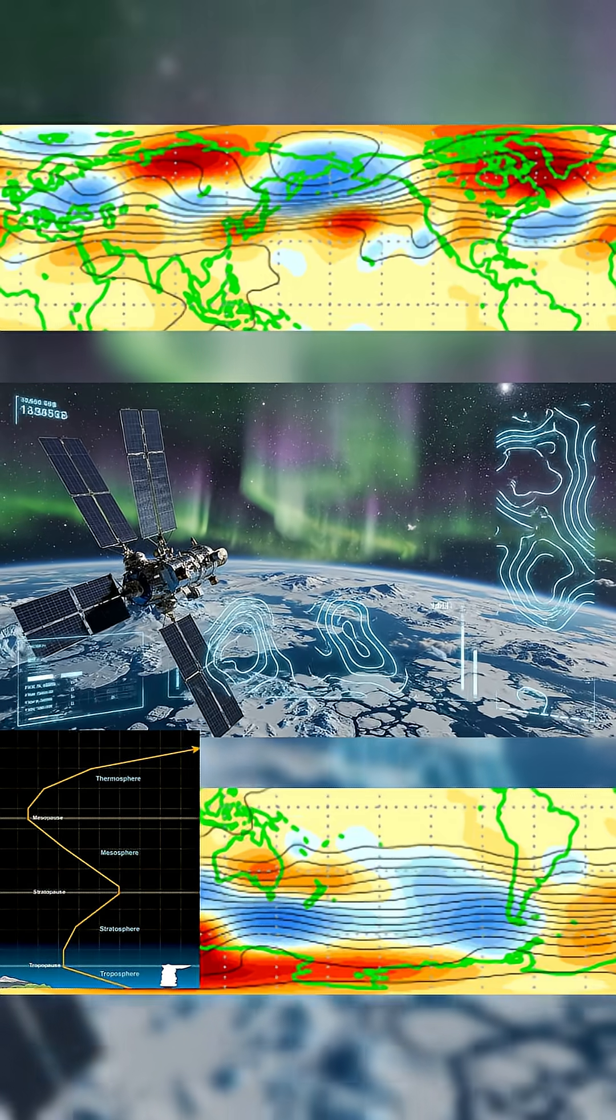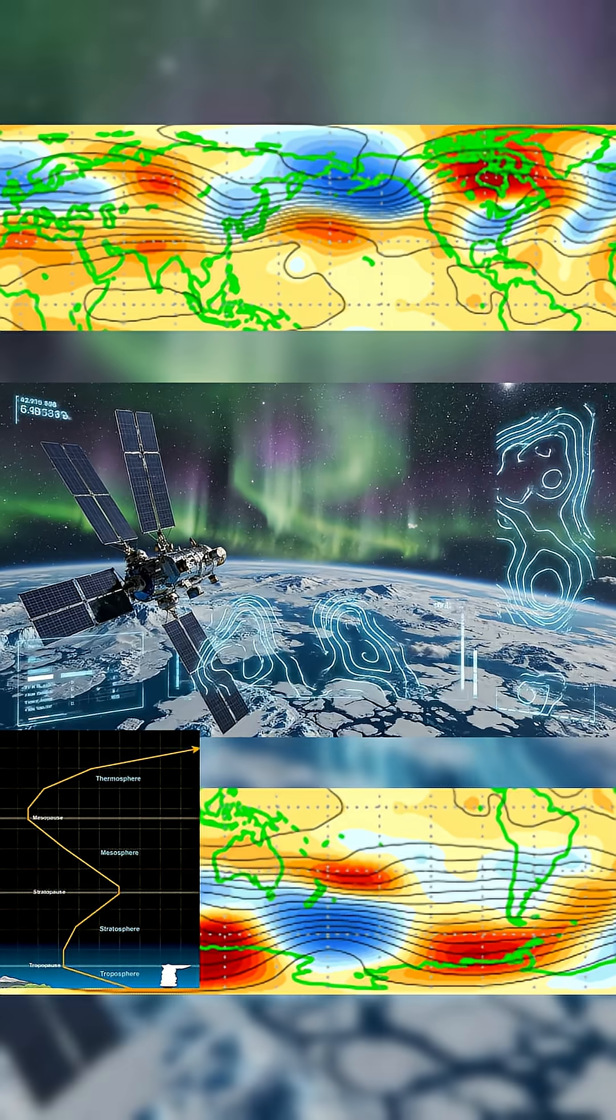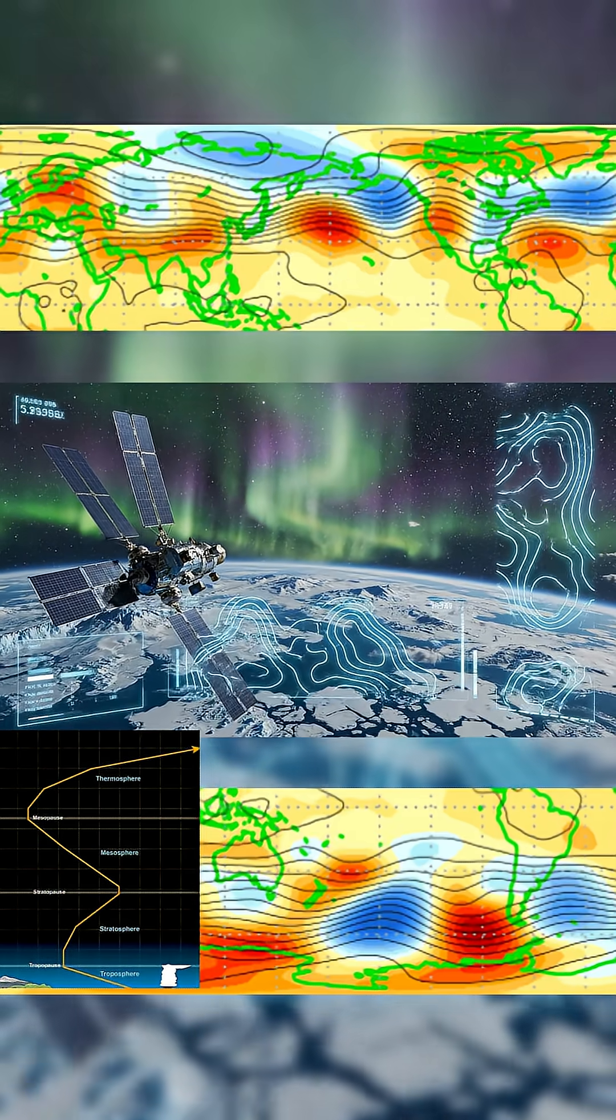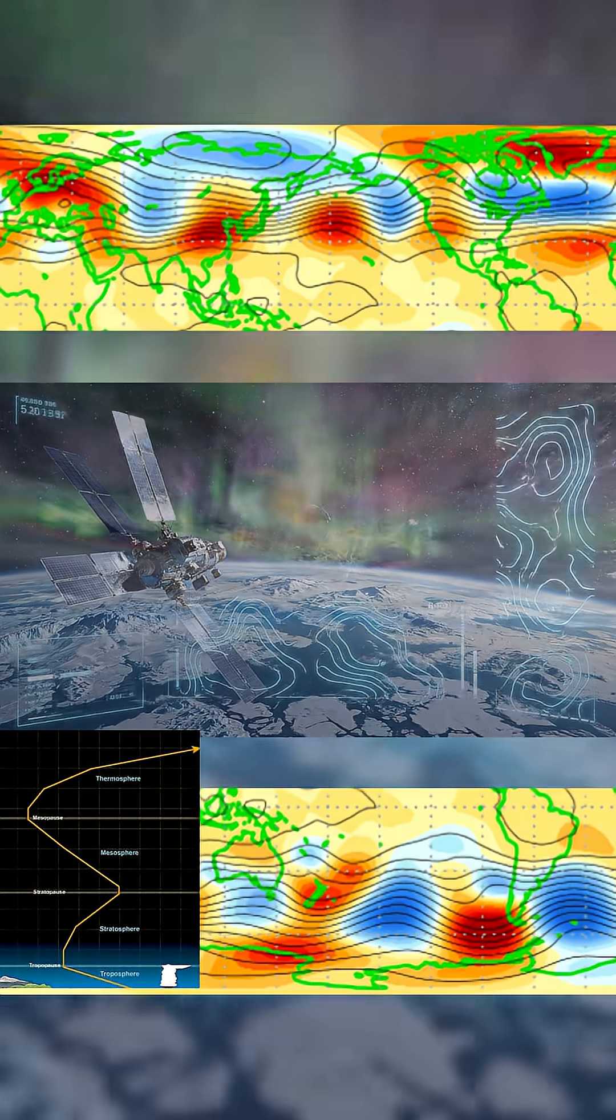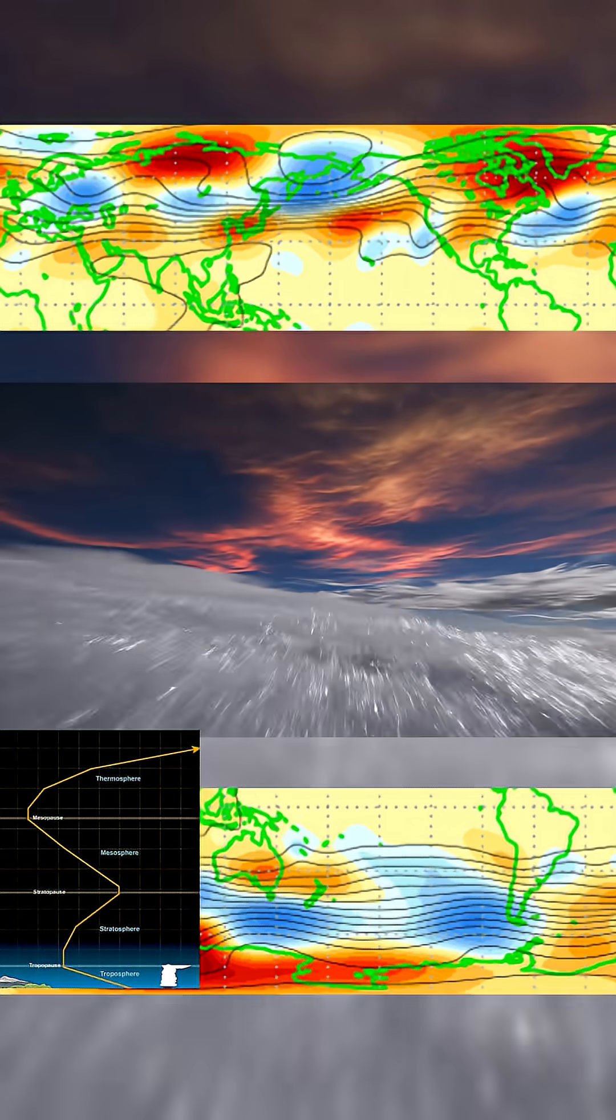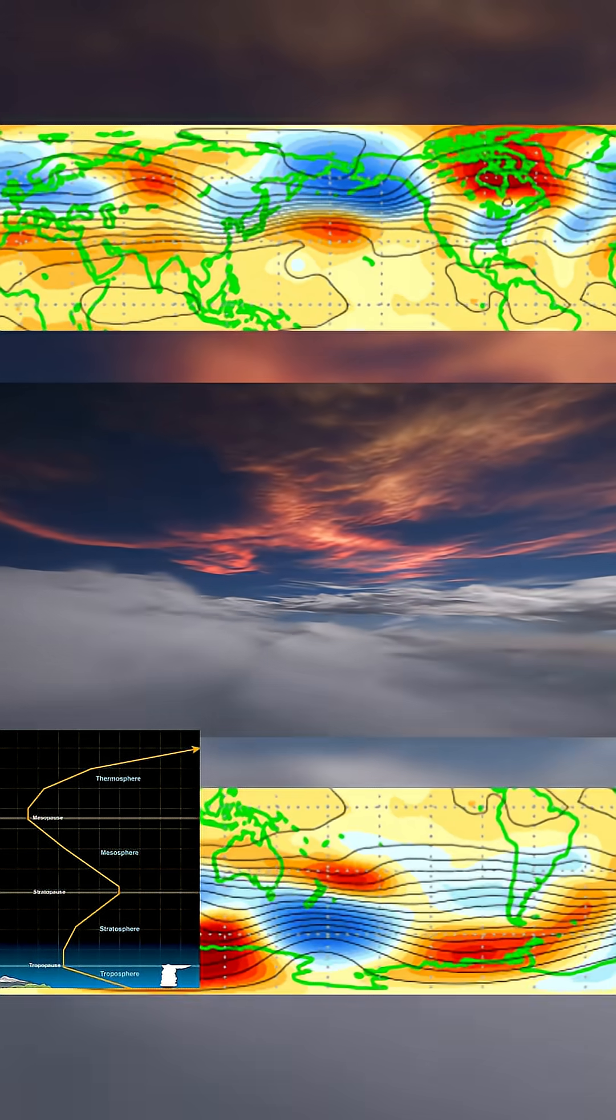Above the Arctic Circle, the atmosphere is shifting in ways that have meteorologists uneasy. Satellite soundings this morning show temperatures in the stratosphere climbing more than 40 degrees Celsius in less than a week.